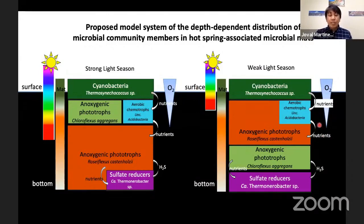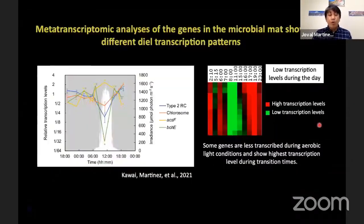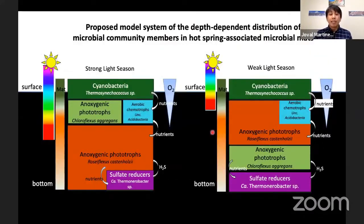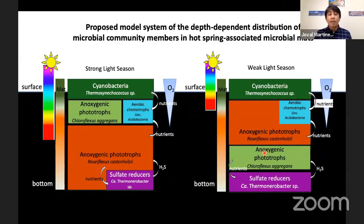The phototrophic mat serves as a model system. We elucidated diversity and depth-dependent distribution of microbial community members, especially phototrophic organisms. Despite seasonal changes, we identified a stable community; however, they differentiate in niche based on microenvironmental gradients of light and oxygen concentration. Since we are also interested in gene activity over the diel cycle, we focused on Chloroflexus aggregans — a motile organism that can move between areas and is most competitive in the anoxic dark environment.